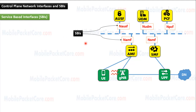This graph shows the service-based interface representation. In SBI representation, all network functions in the Control Plane are using a common bus to exchange Control Plane messages between each other. Each network function uses a service-based interface to connect to this common bus.